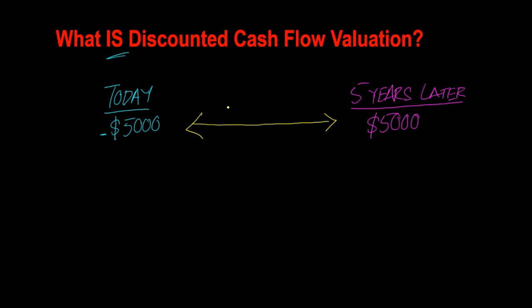In other words, when you are dishing out $5,000, it's not costing you just $5,000 — it's costing you the opportunity cost as well. Opportunity cost is the cost you pay in terms of an opportunity foregone. While you're waiting these five years, you are losing out on the opportunity to do other things with that $5,000.